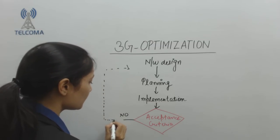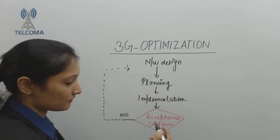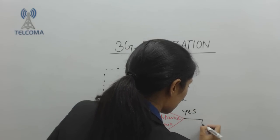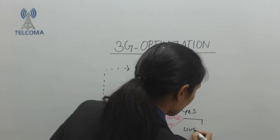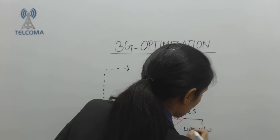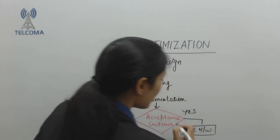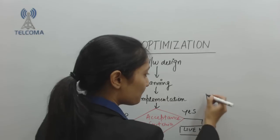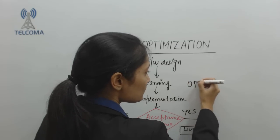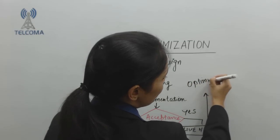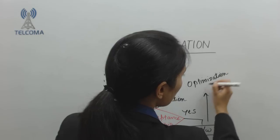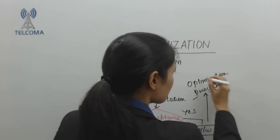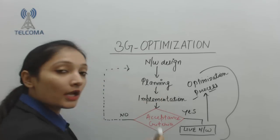If the acceptance criteria are met, the network becomes a live network. As soon as the network becomes live, the process of optimization begins. This is a continuous process — optimization takes place throughout the entire lifetime of the network.